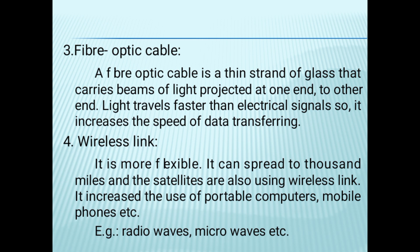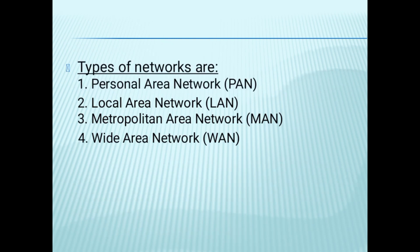Wireless link is more flexible. It can spread over thousands of miles, and satellites also use wireless links. It increases the use of portable computers, mobile phones, etc. Examples include radio waves and microwaves.